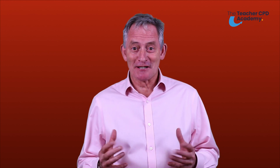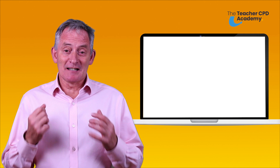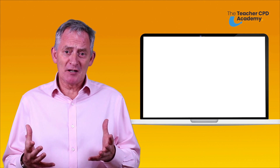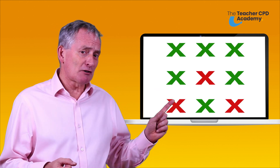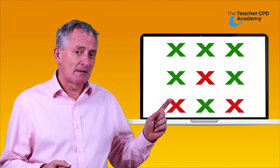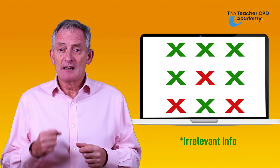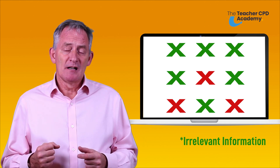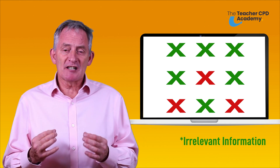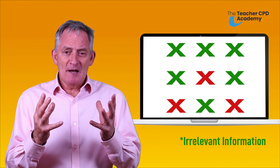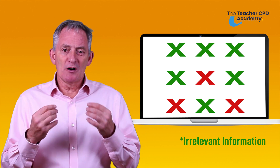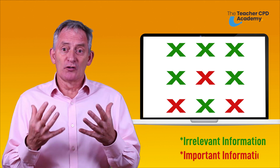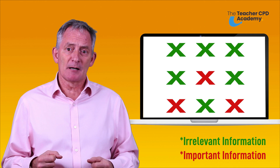Second, and we see this a lot, is too many words on a slide. I'm going to represent a slide with lots of information on it using these nine crosses here. The green crosses represent irrelevant or redundant information, and the red crosses are the core messages that you are trying to get your students to remember by putting a slide up.